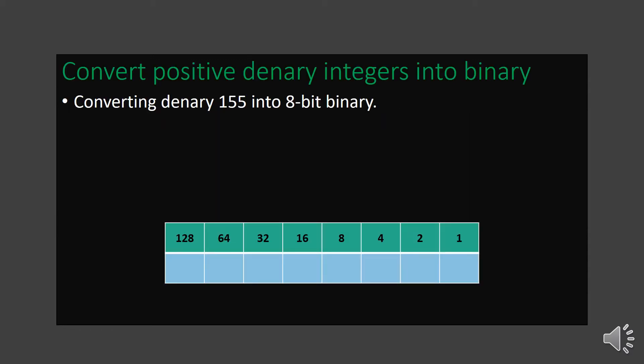Now we are going to see how to convert a given positive decimal integer into binary. We will convert it into 8-bit binary. To do this, we draw a table with 8 boxes, and in those boxes we write the binary multiples of 2: 1, 2, 4, 8, 16, 32, 64, 128. With this table we will be able to easily convert a given decimal number into binary. We will use Method 1: the continuous subtraction method.